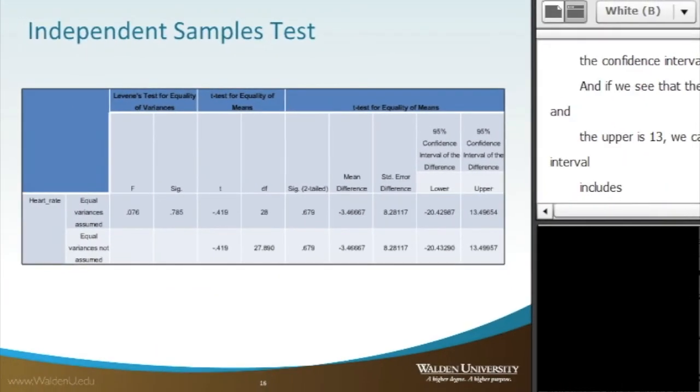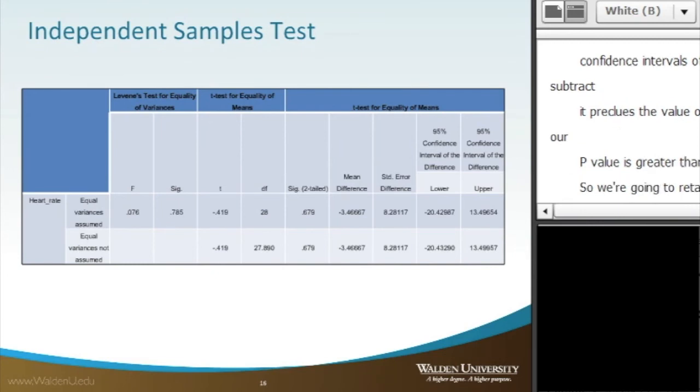So somewhere between the confidence intervals of the two groups, when we subtract them, it includes the value of zero, which relates back to why our p-value or our SIG value here is greater than .05. So we're going to retain our null hypothesis and reject the alternative.